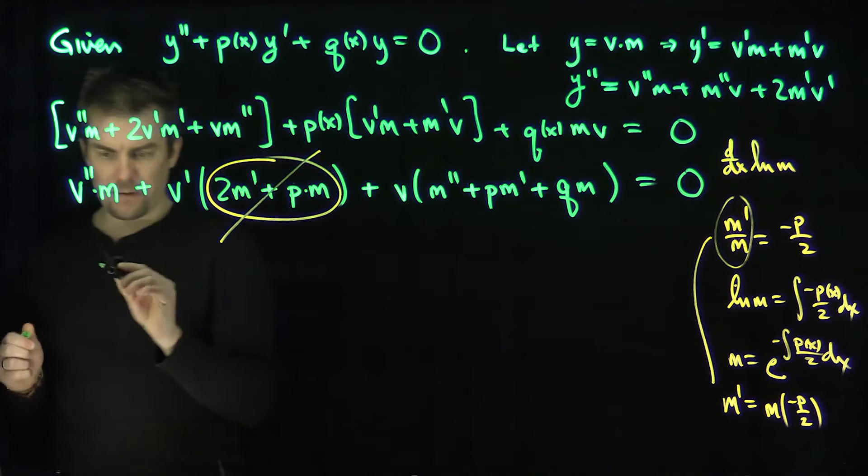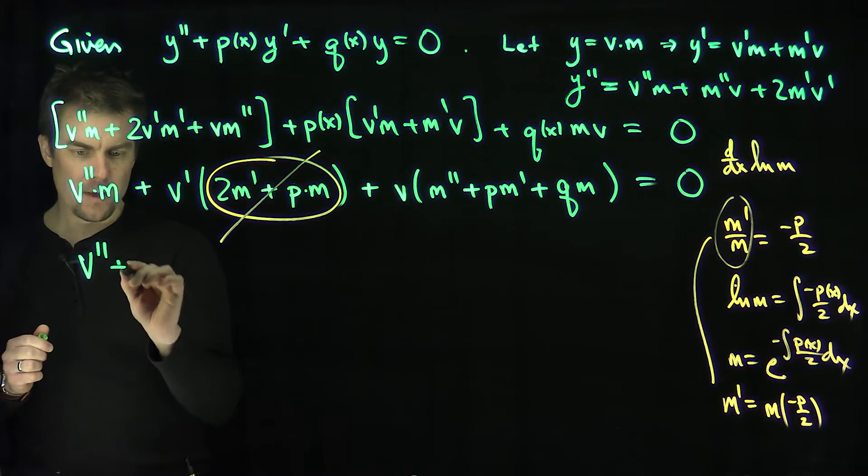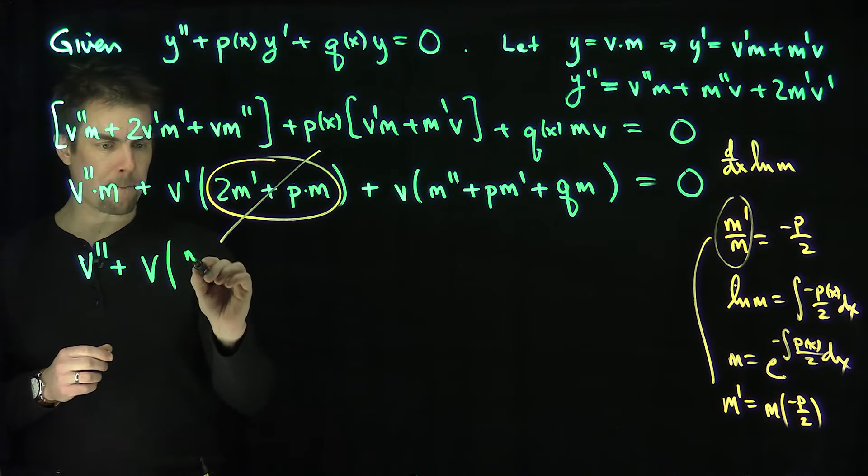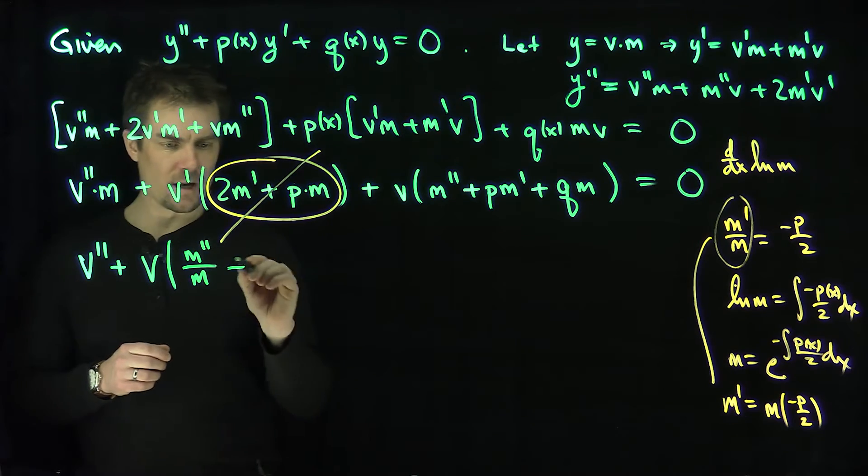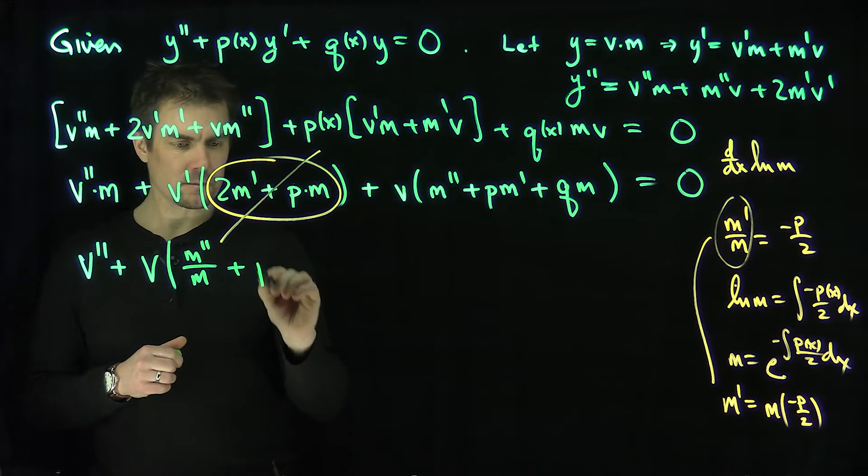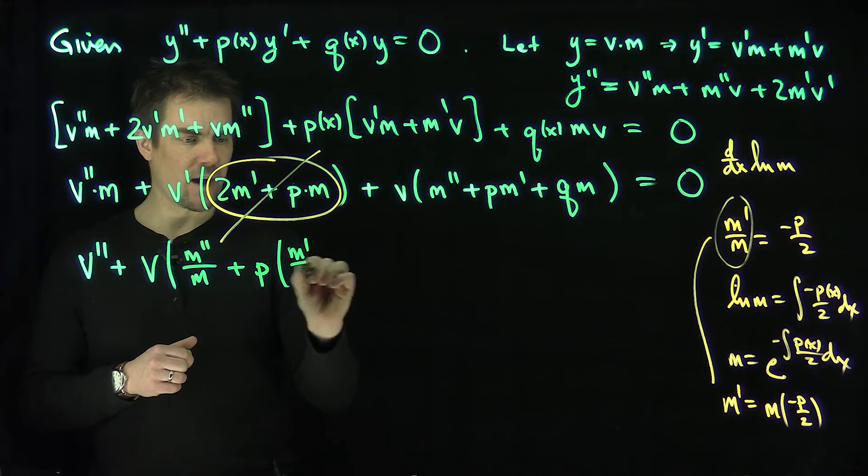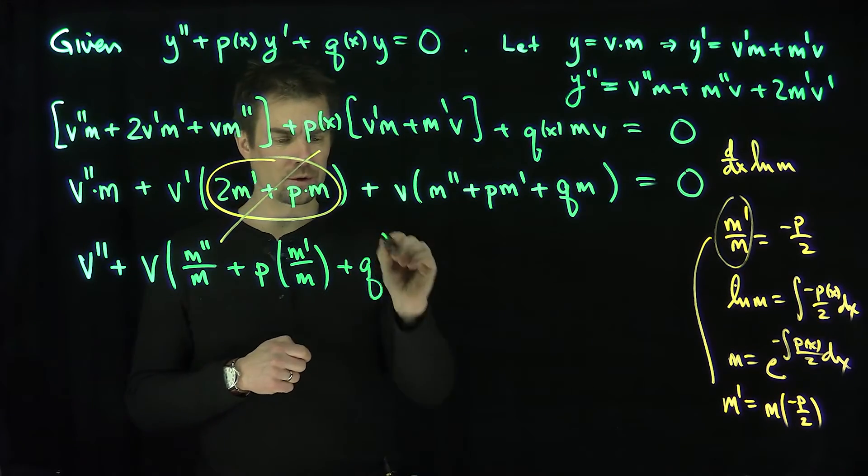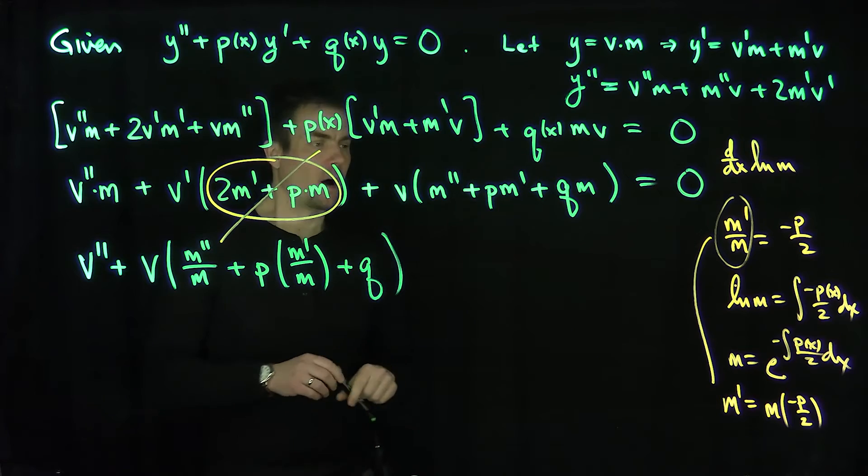Our second order equation for v will now turn into v double prime plus v times this number over here, m double prime over m plus p times m prime over m. We know that already. Plus q, just plain old q.